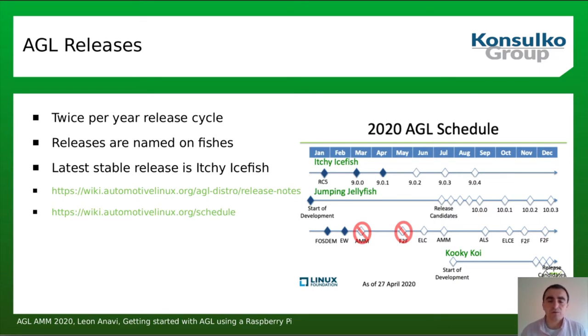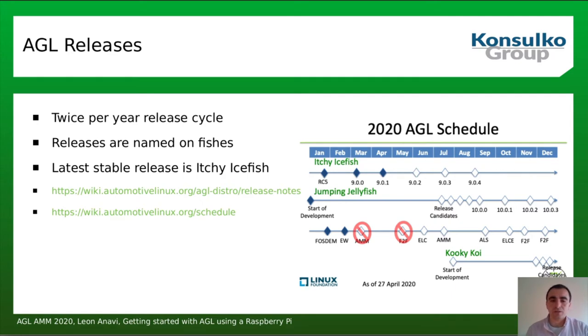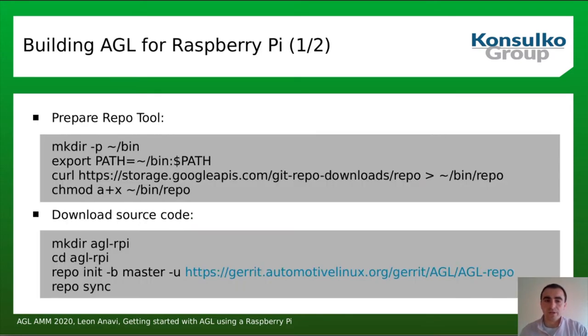Twice per year there is a new release of AGL; releases are named after fish. The latest stable release at the moment is Icefish, but a new release candidate is in the pipeline. More details are available at the AGL wiki.